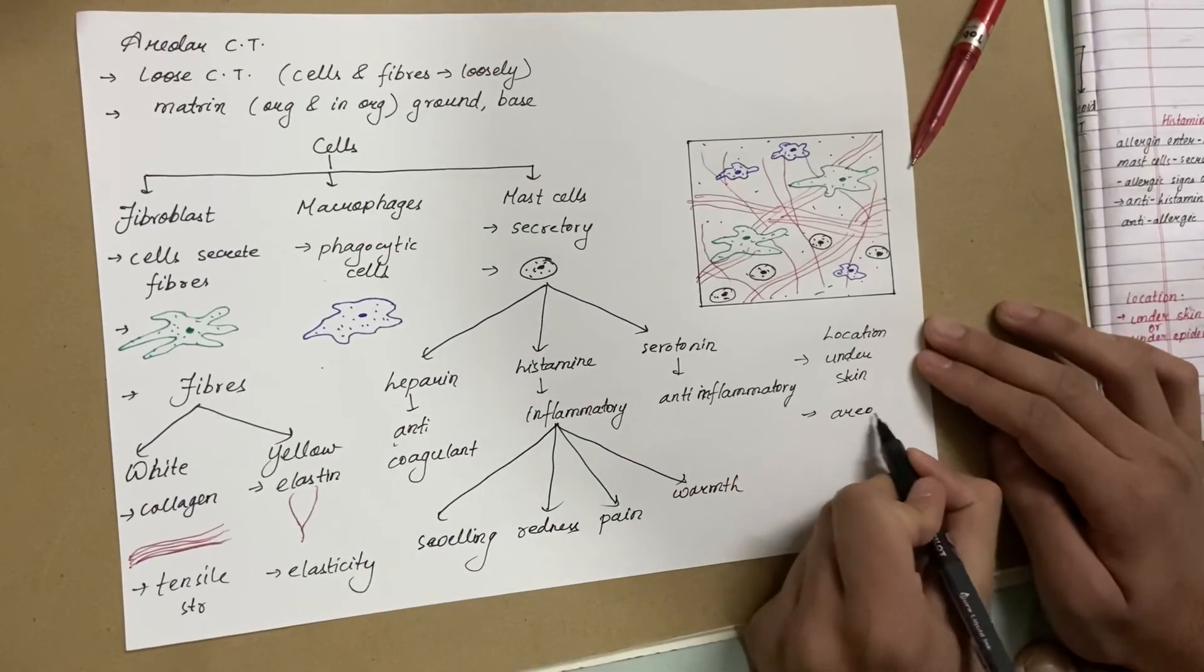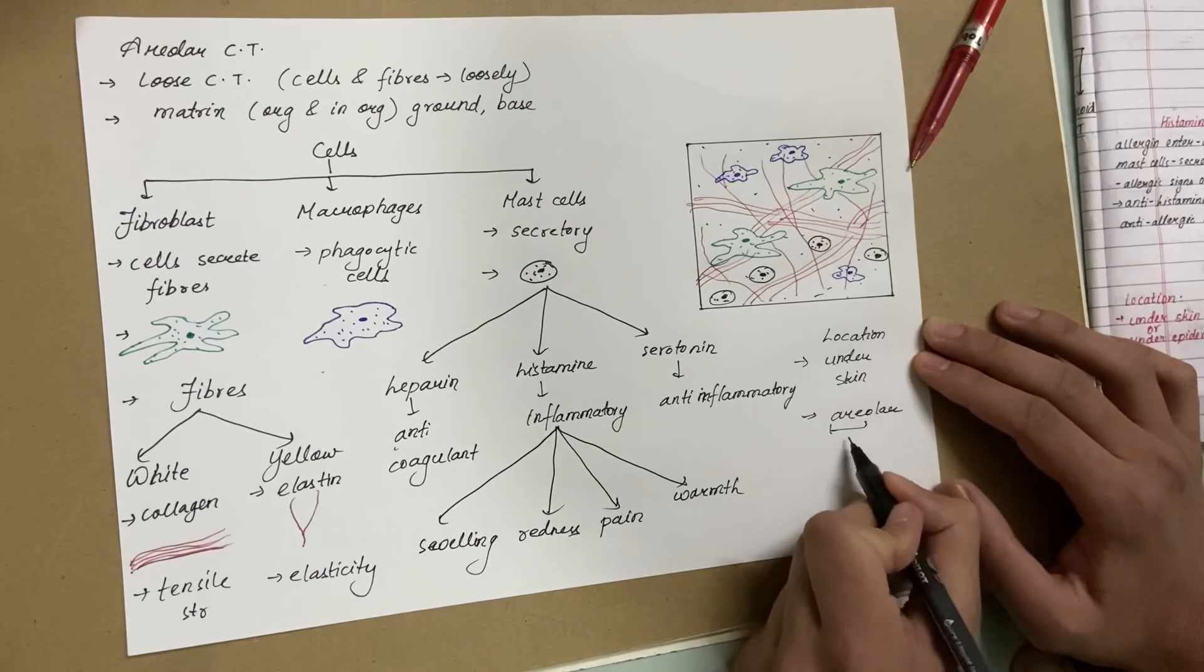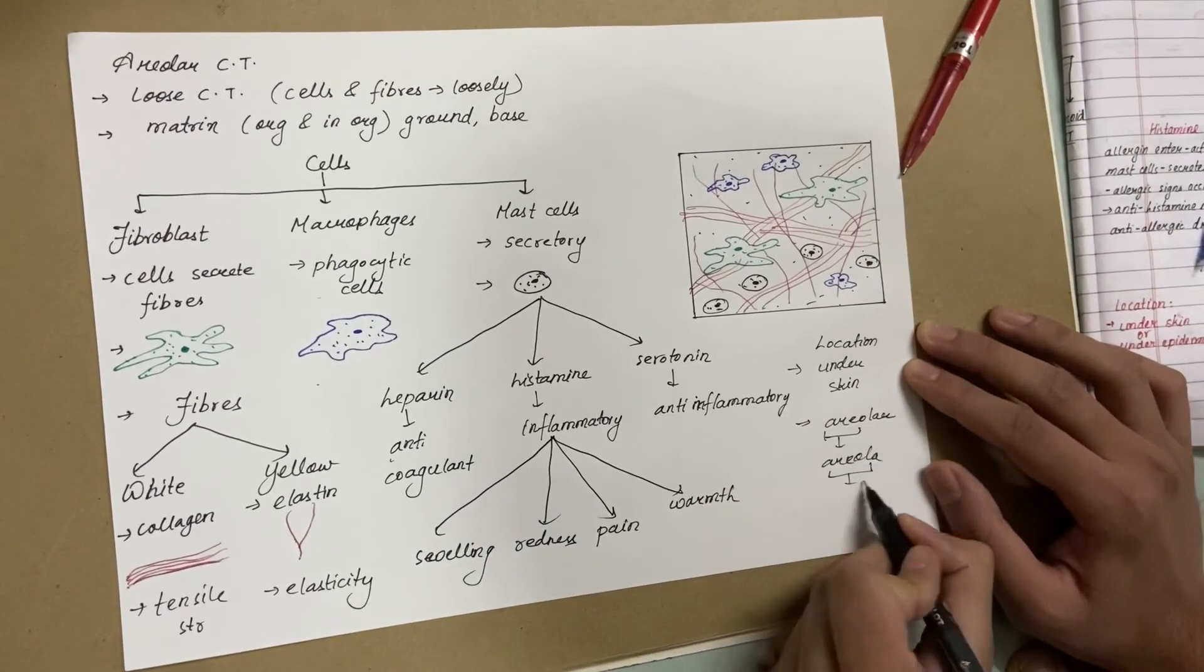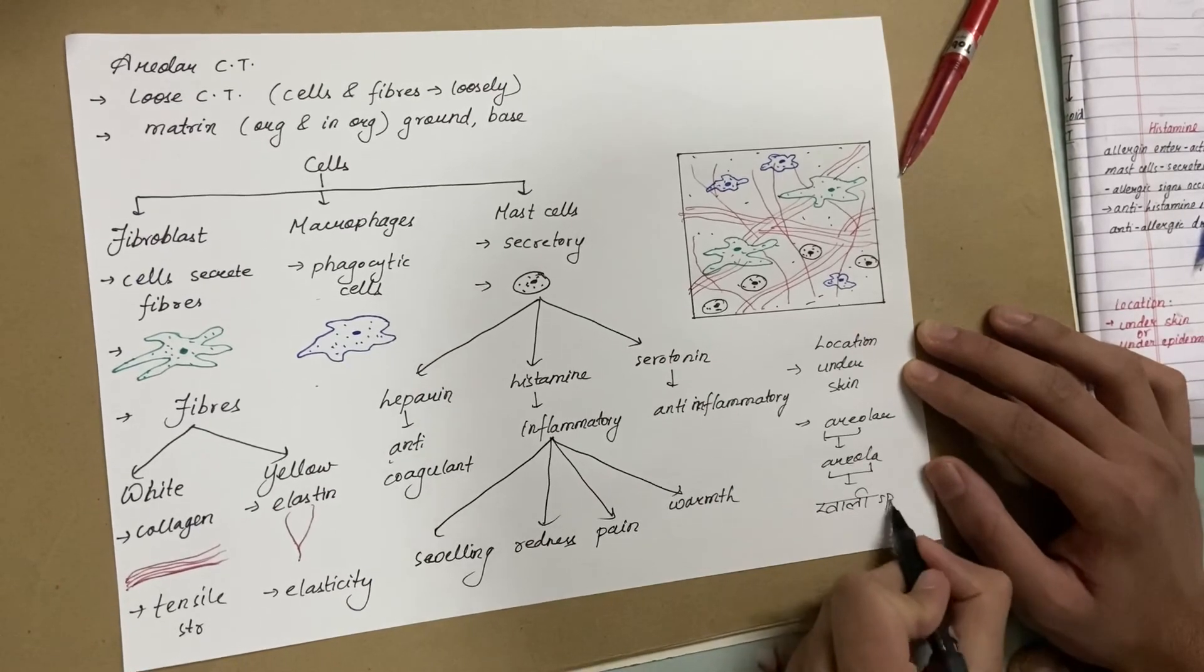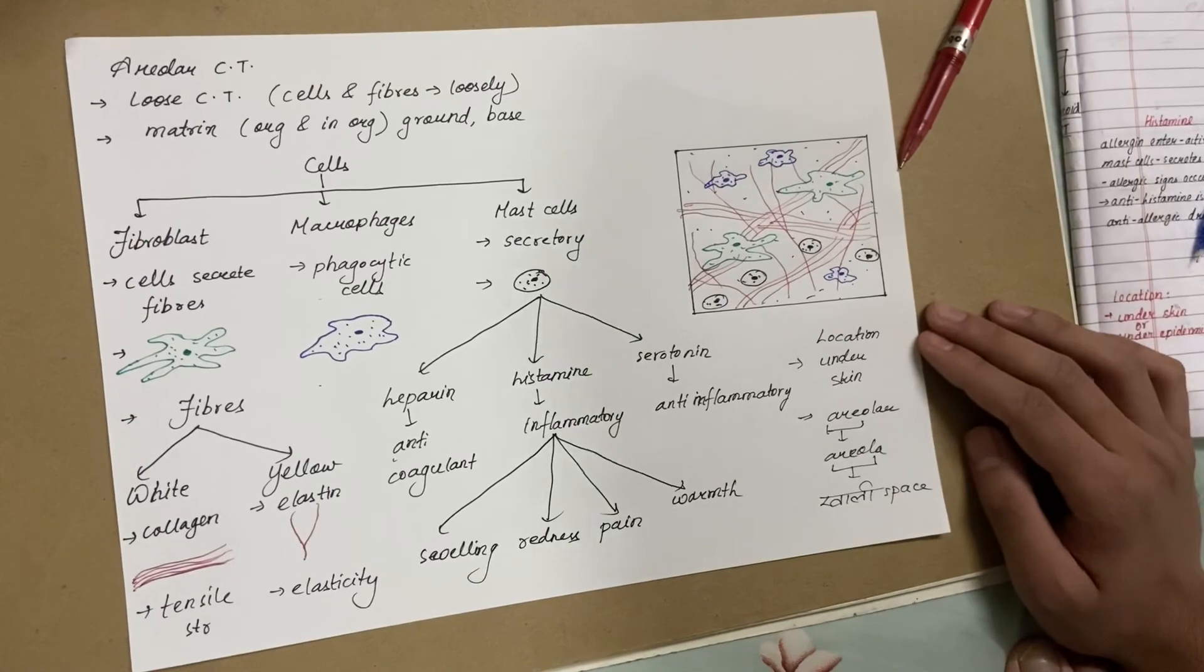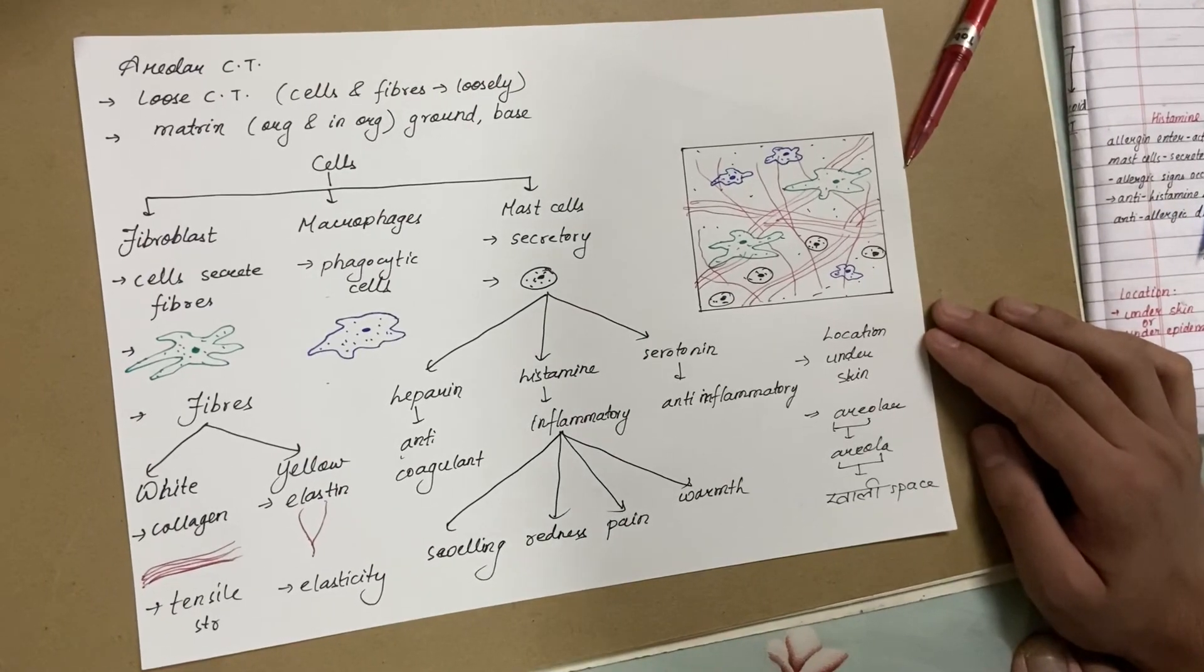It contains areolar connective tissue as it is derived from the word areola, which means empty space. So obviously areolar connective tissue is also found in empty spaces. And that's your whole areolar connective tissue under five minutes.